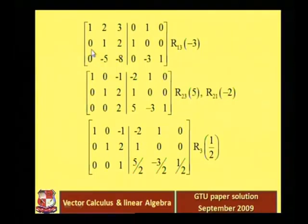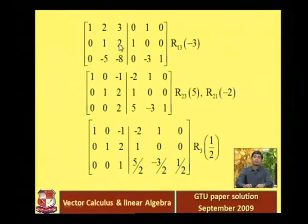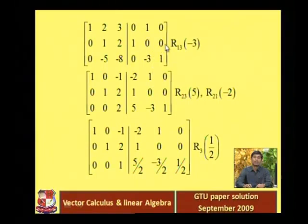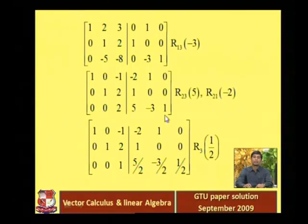Multiply the second row with 5 and add into the third row: 0 plus 0 is 0; 5×2 = 10, 10 minus 8 = 2; 5×1 = 5, 5 minus 3 = 2... wait — the third row becomes 0, 0, 2, 5, minus 3, 1.